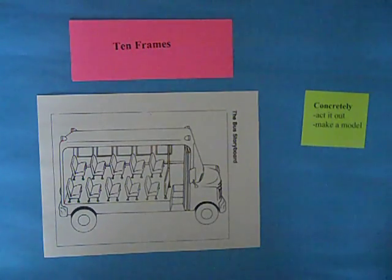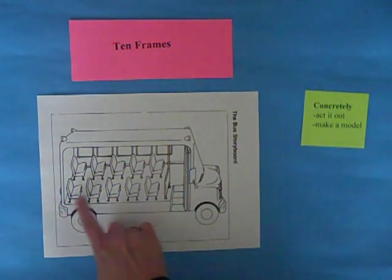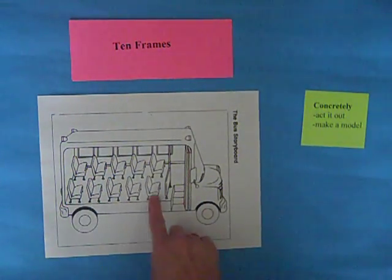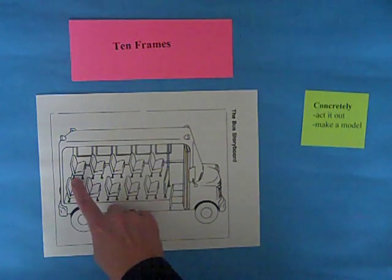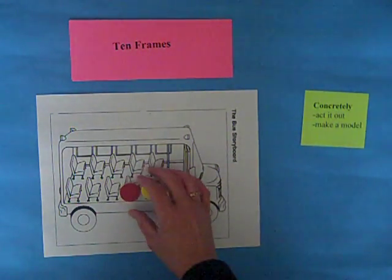Nelson has a really neat activity about the school bus and we can do a human ten frame. If you're in your class you could line up five chairs in the front and five in the back, and these would be your students actually.